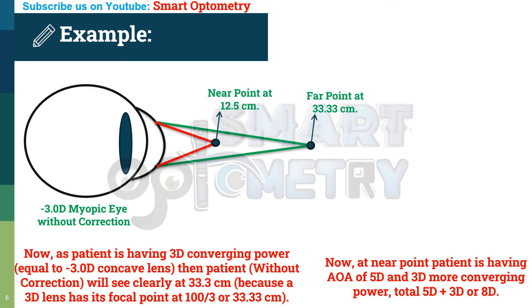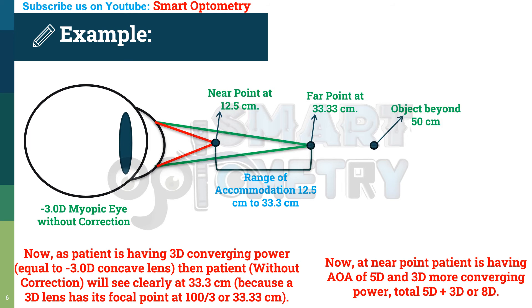Any objects situated between 12.5 cm and 33.3 cm will be seen clearly using accommodation. To see objects beyond 33.33 cm, the patient would need less than 3 diopters of power. But even after relaxing the full amplitude of accommodation of 5 diopters, the patient still has minus 3 diopters of myopia, which fixes the far point at 33.33 cm. So objects beyond 33.3 cm will be blurred.